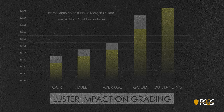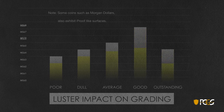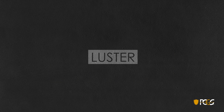Note: some coins, such as Morgan dollars, will sometimes exhibit proof-like surfaces, and for these you really have to look at luster in a different way, since there's no cartwheel or frost effect on these — we'll look at them in Grading 102. We hope you've enjoyed our quick look at luster, and stay tuned for the next installment of Grading 101.